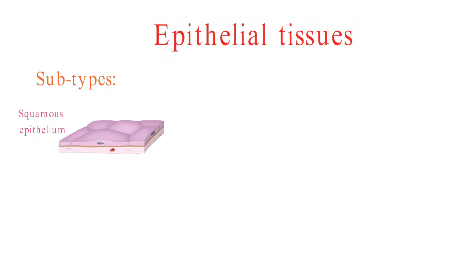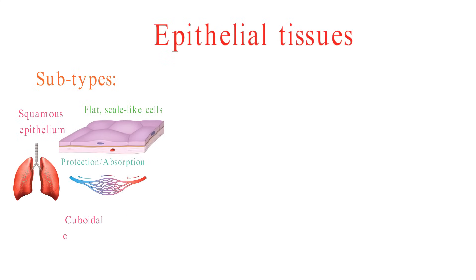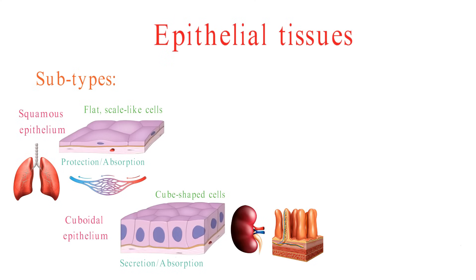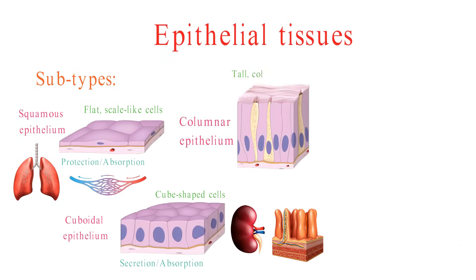Squamous epithelium is made up of flat, scale-like cells. It is found in areas where there is a need for protection or absorption, such as the lining of the lungs and the blood vessels. Cuboidal epithelium is made up of cube-shaped cells. It is found in areas where there is a need for secretion or absorption, such as the lining of the kidneys and the small intestine. Columnar epithelium is made up of tall, column-like cells. It is found in areas where there is a need for secretion, such as the lining of the stomach and the intestines.